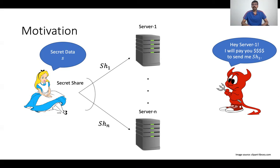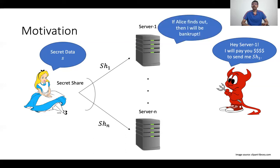Even though this offer is pretty enticing, the server is wary of the following possibility. If Alice somehow finds out that the server cheated by sending the share it received to an external party, then Alice could sue the server in the court of law. Specifically, the share that Alice sent to each of these servers could have some identifying information embedded inside, and this information could help Alice win the case against the server. And if Alice wins the case, it could result in a big loss of reputation for the server, and also result in bankruptcy due to the service agreement it had with Alice.